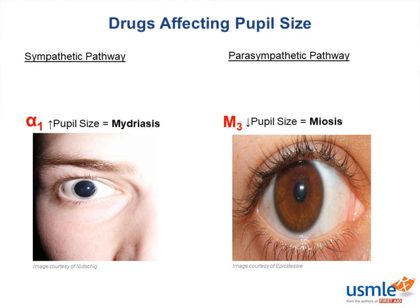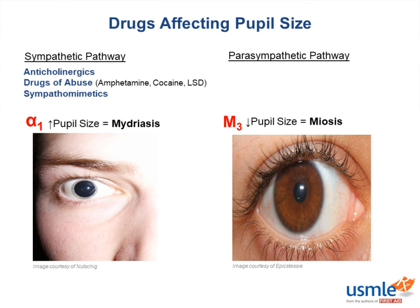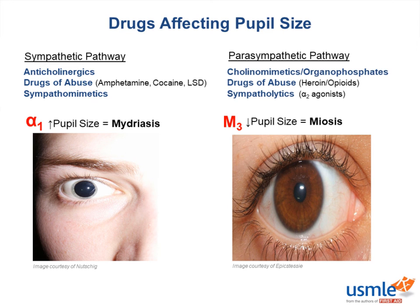To sum up, pupil dilation is under the sympathetic pathway, and pupil constriction is under the parasympathetic pathway. Therefore, we would expect to see an increase in pupil size with drugs that either block the parasympathetic pathway, like anticholinergics, or drugs that stimulate the sympathetic pathway, like amphetamines, while a decrease in pupil size is usually due to over-stimulation of the parasympathetic pathway, like in organophosphate poisoning or opioid use.